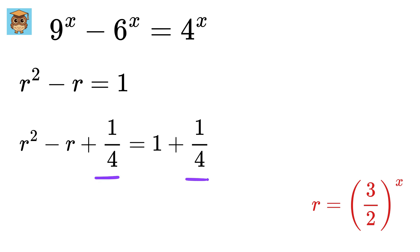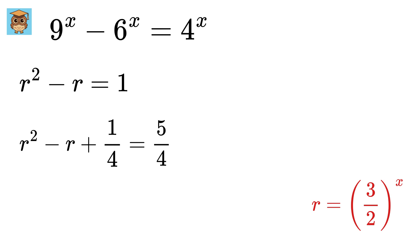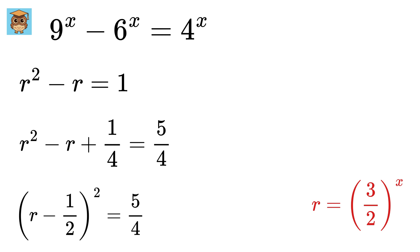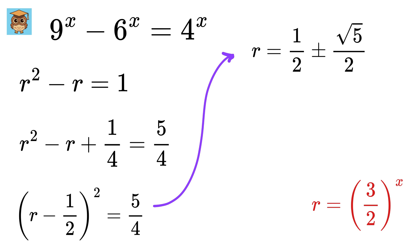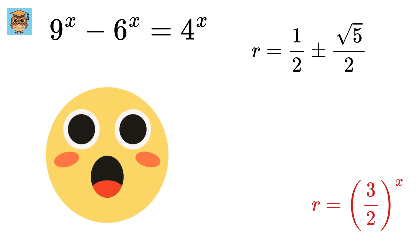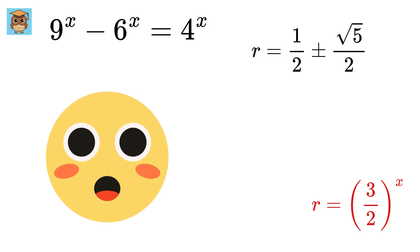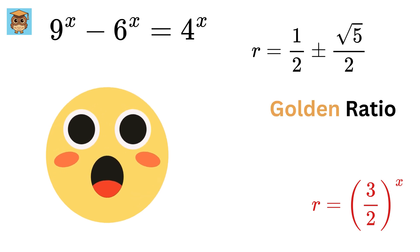Now add 1 by 4 on both sides to get this equals 1 plus 1 by 4, or 5 by 4. This is the same as r minus half whole square equals 5 by 4. So r equals half plus or minus root 5 over 2. What a coincidence! It turned out to be the golden ratio.